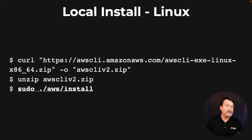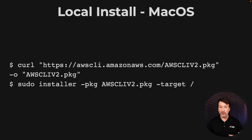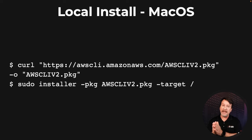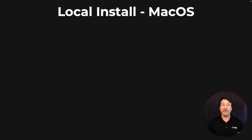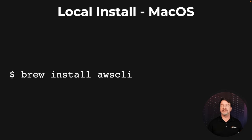With Mac operating system, it's the same idea. We use a curl to bring down the package and then we install it. We're using a package installer from Amazon to do this. Now, if you have your own package manager built into your Mac operating system, use that. For example, brew — the command is so simple: just brew install AWS CLI.